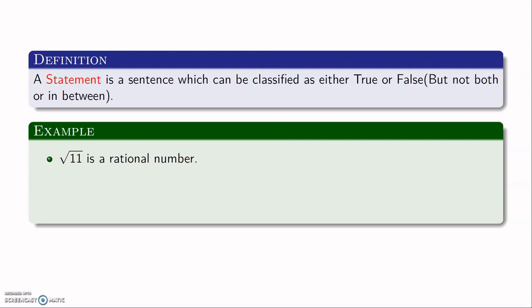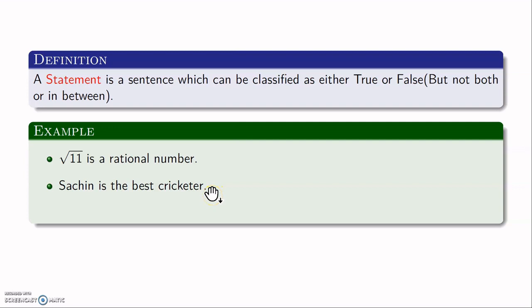Let us look at some more examples. Root 11 is a rational number — we know that root 11 is an irrational number, so this sentence is false, and therefore it is a statement. Sachin is the best cricketer — this is an opinion; some people will say yes and some will say no, so I cannot classify this sentence as true or false, meaning it is not a statement. Third: every continuous real-valued function is differentiable. We know from calculus that this is false, because mod x is continuous on R but not differentiable. So this is a false sentence and therefore a statement.